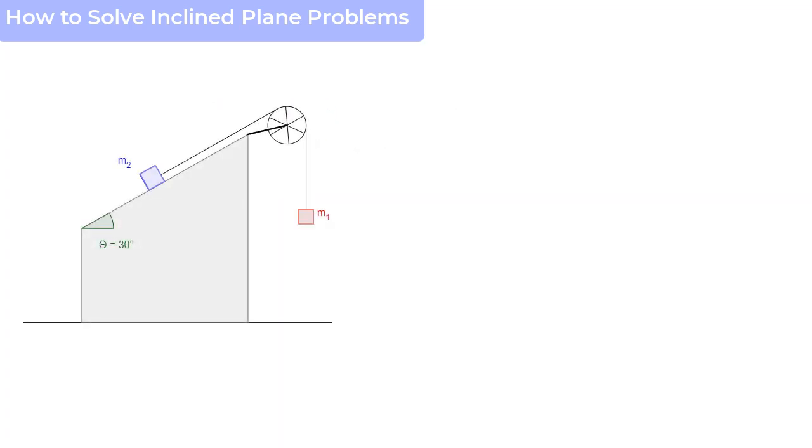So what we have here is an inclined plane that has block m2 of mass 3.7 kilograms on a frictionless plane that is inclined at an angle of 30 degrees, and this is connected by a cord over a massless frictionless pulley to a second block of mass m1 of 2.3 kilograms.